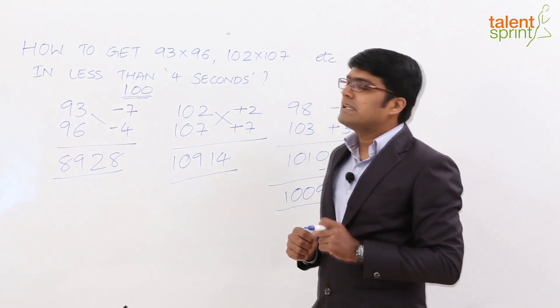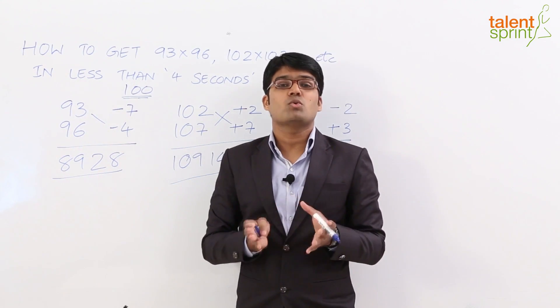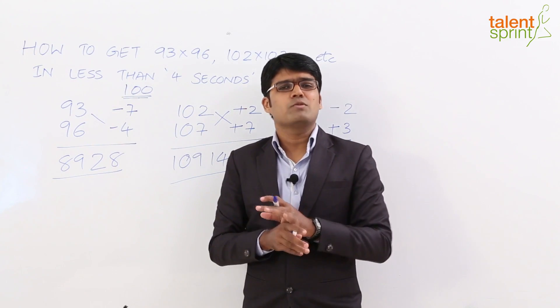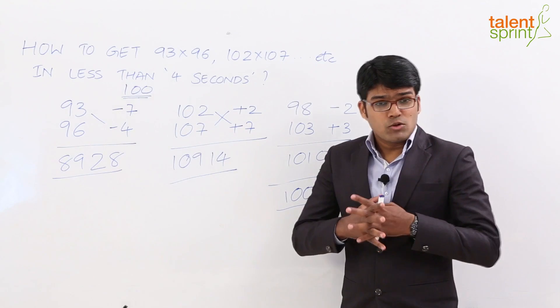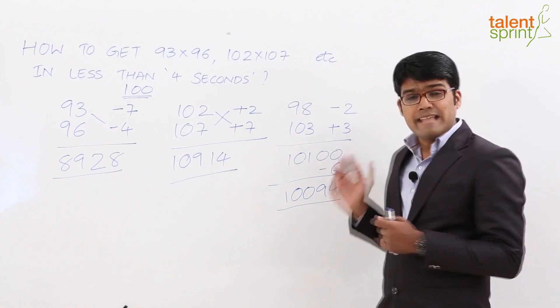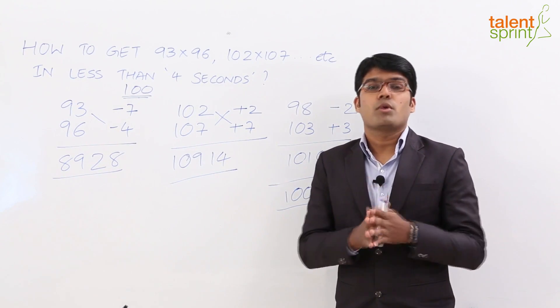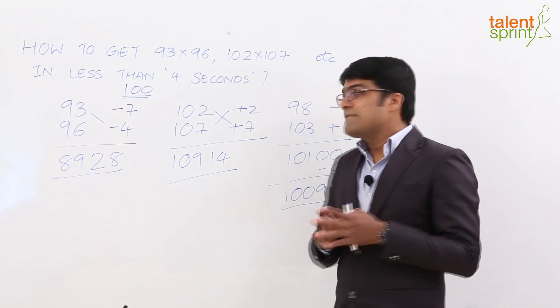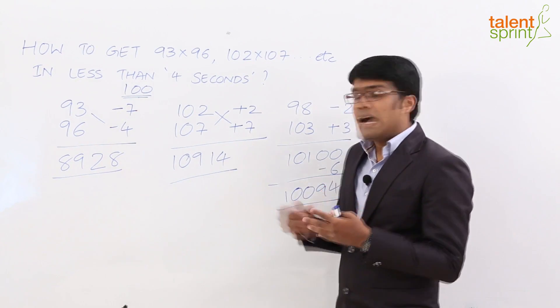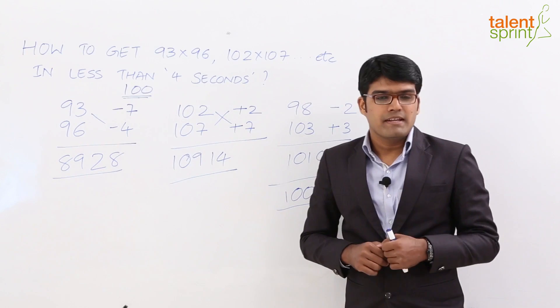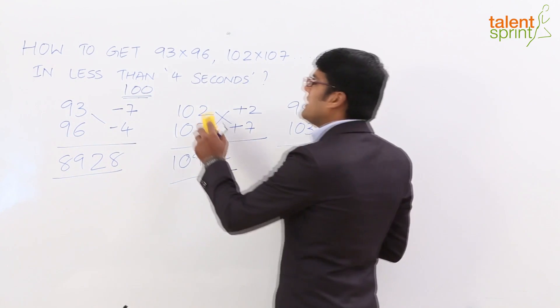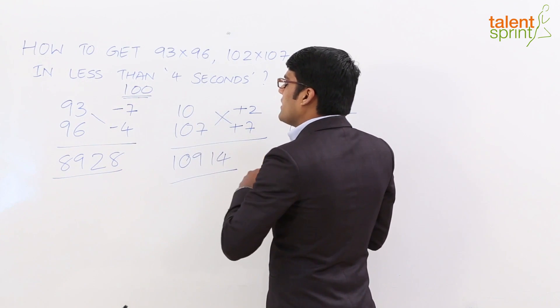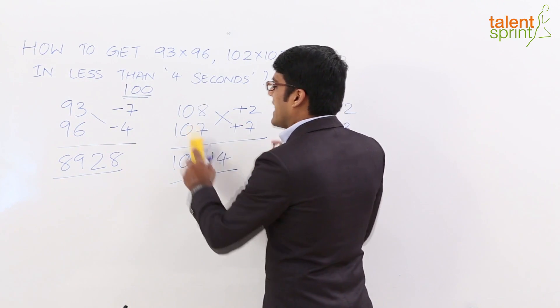So this is how we can multiply numbers that are close to 100 in a smart way without having to write much on paper. So now that we have learned how to multiply numbers that are close to 100 with the help of these 3 examples, let us understand a very important point. What do we do if we get a 3 digit number as a product of the 2 values that we get here? Let us understand this with the help of a simple example. Let us say we have to multiply 108 with 116. Let us see what happens in this case.